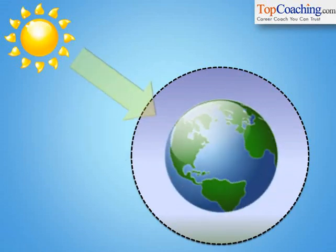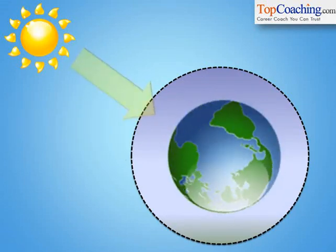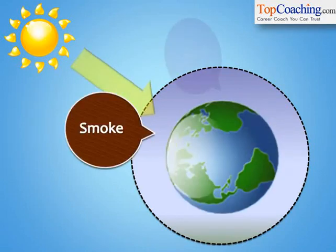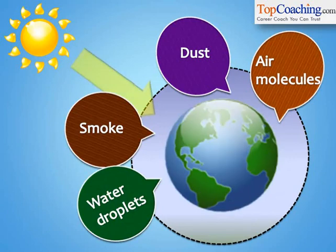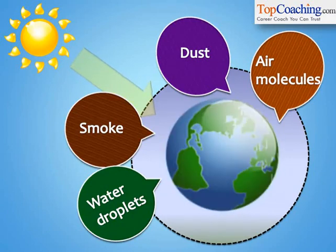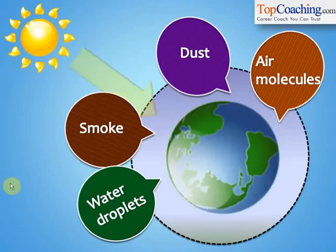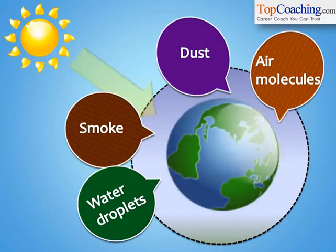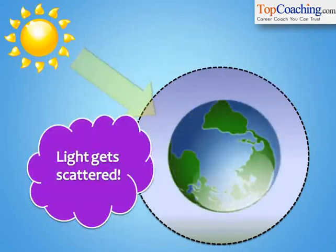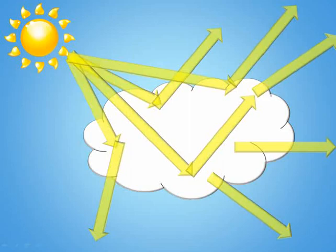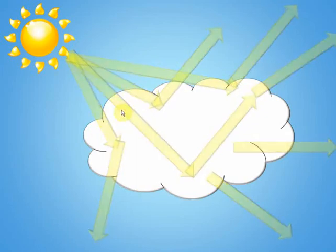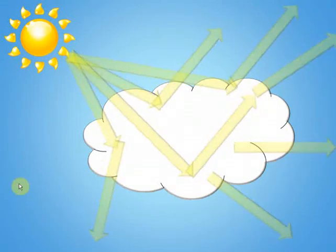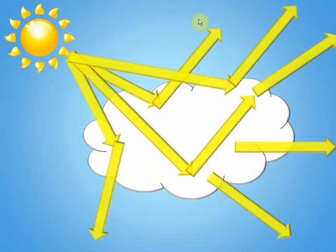Scattering occurs, for example, when sunlight strikes the Earth's atmosphere. The atmosphere consists of smoke, dust, water droplets, and air molecules — all of these scatter sunlight and sunlight spreads in all directions. The sunlight strikes a mass consisting of water droplets and gets scattered here, there, and everywhere. Similarly, there could be dust particles or air molecules — in each case, light strikes the molecules and gets scattered, reflected randomly in different directions.